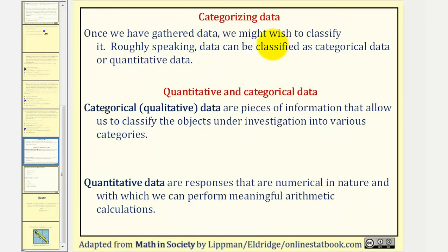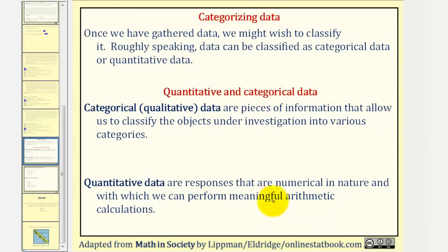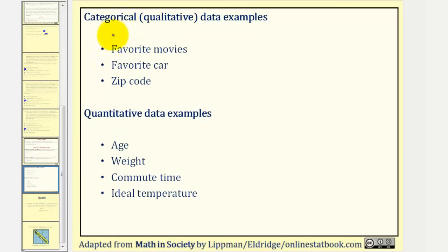Once we have gathered data from a survey, we might wish to classify it. Roughly speaking, data can be classified as categorical data or quantitative data. Categorical data are pieces of information that allow us to classify the objects under investigation into various categories. Quantitative data are responses that are numerical in nature and with which we can perform meaningful arithmetic calculations. So even if the data is numerical, it would still be categorical if the arithmetic calculations were not meaningful. For example, favorite movies or favorite car would obviously be categorical. Notice how even zip codes would be considered categorical — even though they are numerical, finding the sum or average of zip codes would not be meaningful.